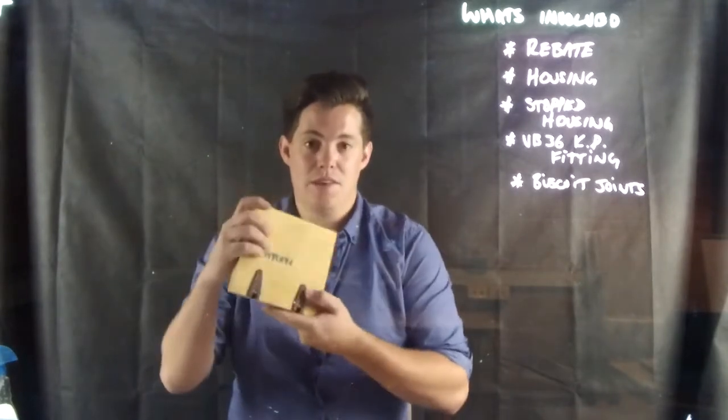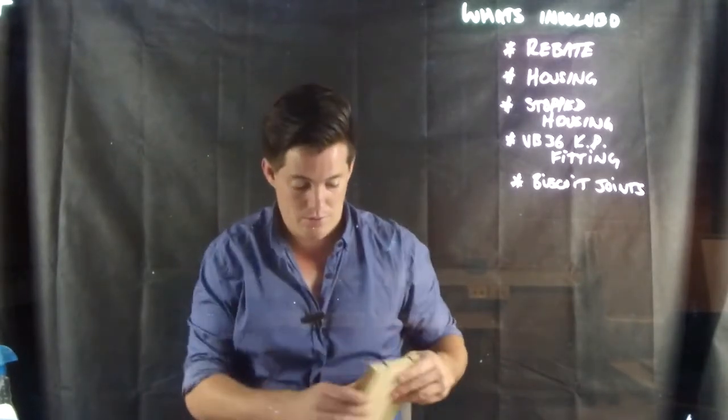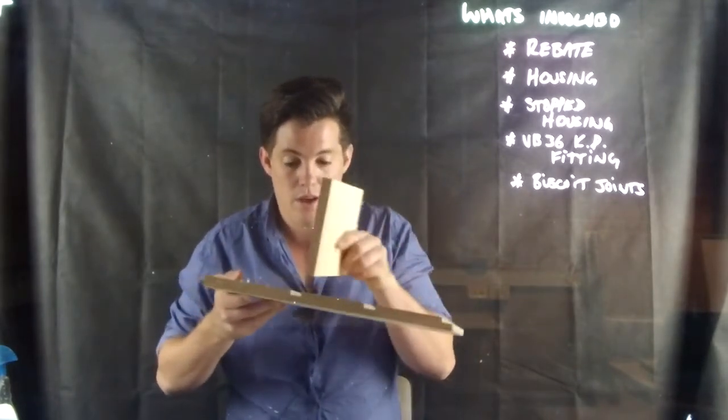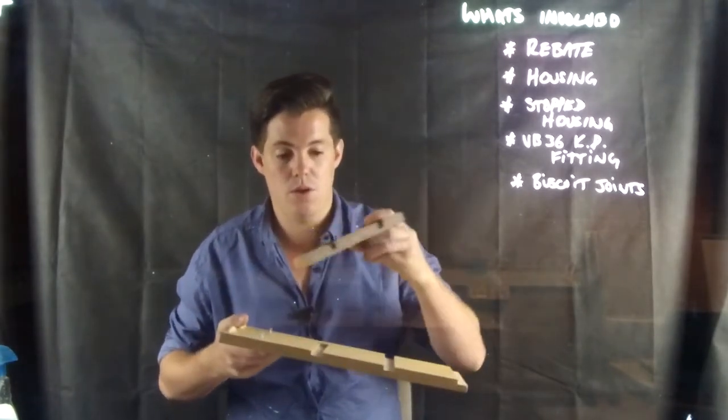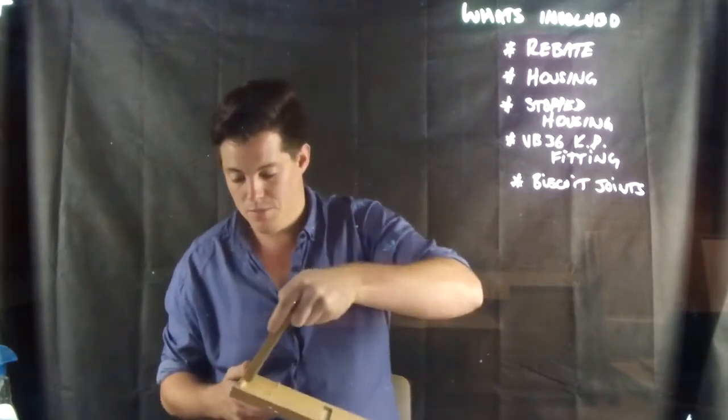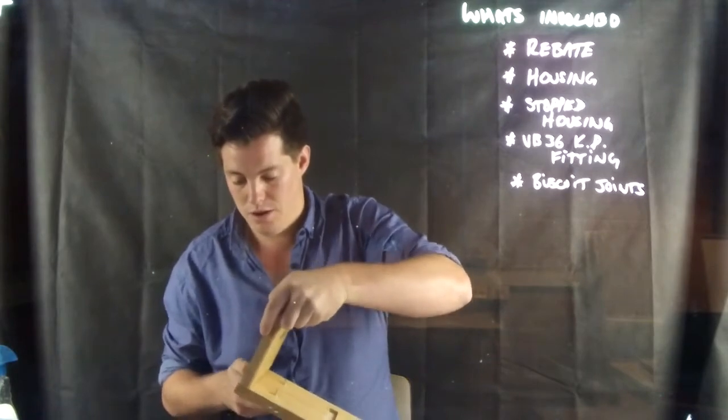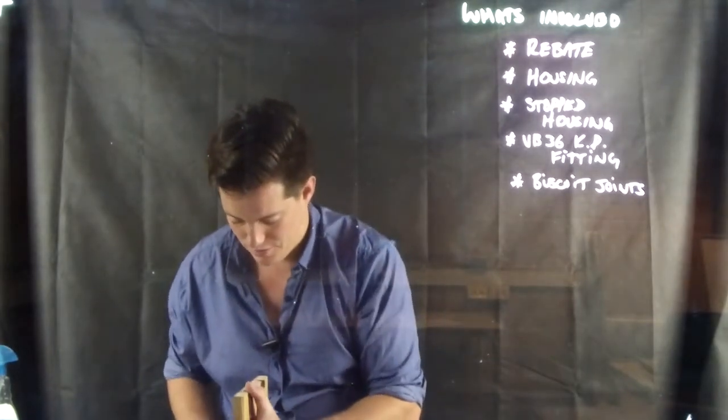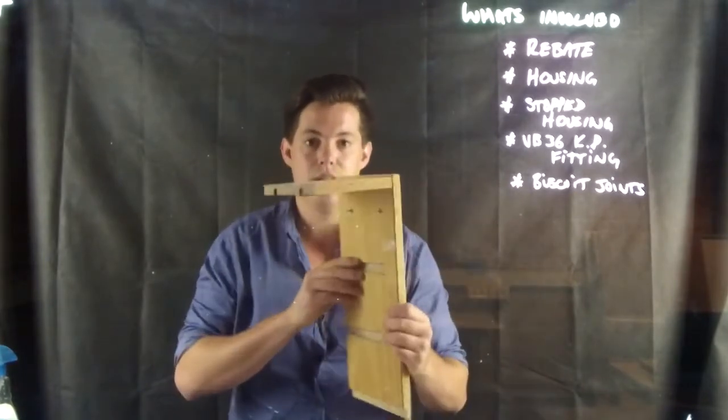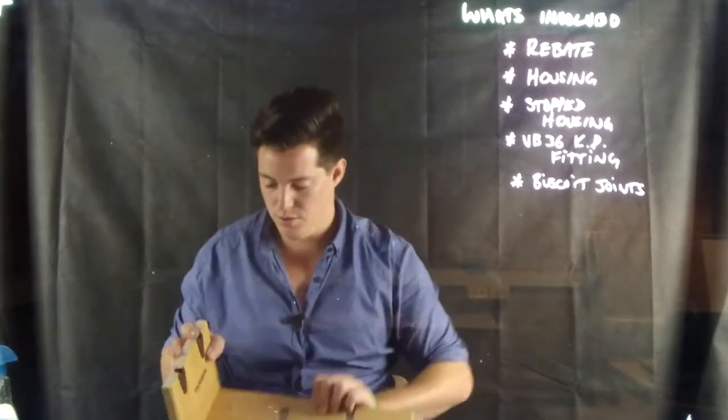On the other piece that's going to attach, all of your timber and all of your joints will fit in. The VB-36 fitting will also fit into that, and the biscuit joint will fit in along the top there as well, so that you're able to get that sorted.